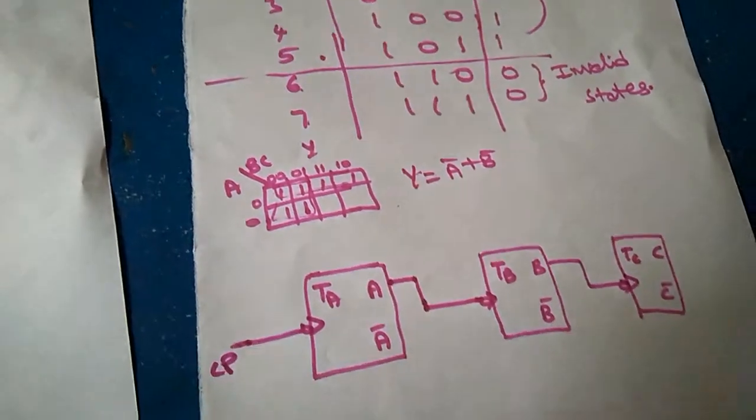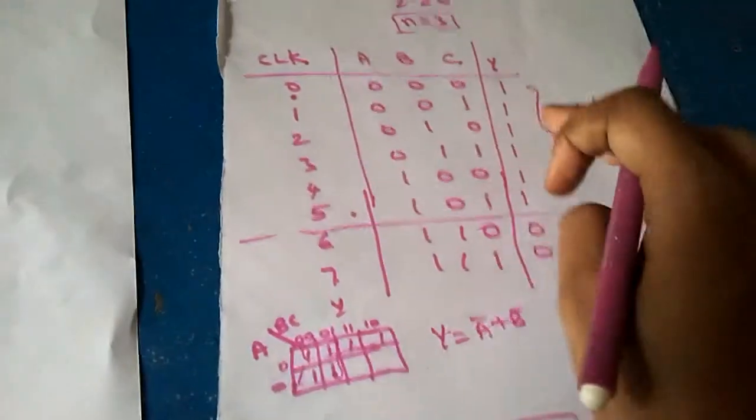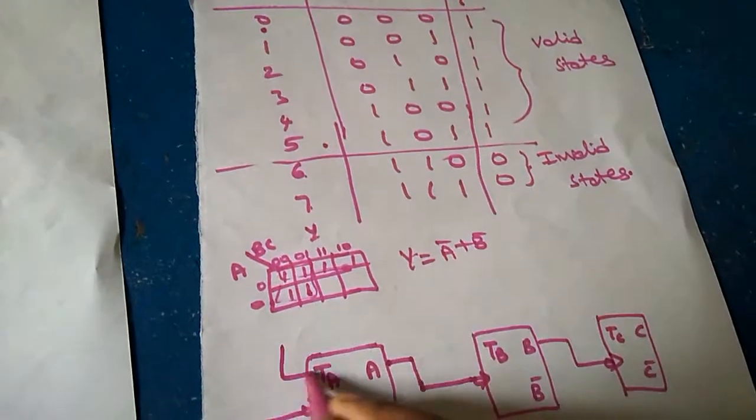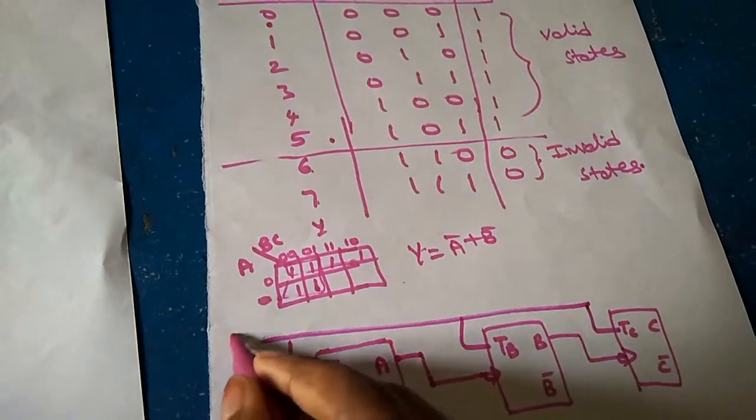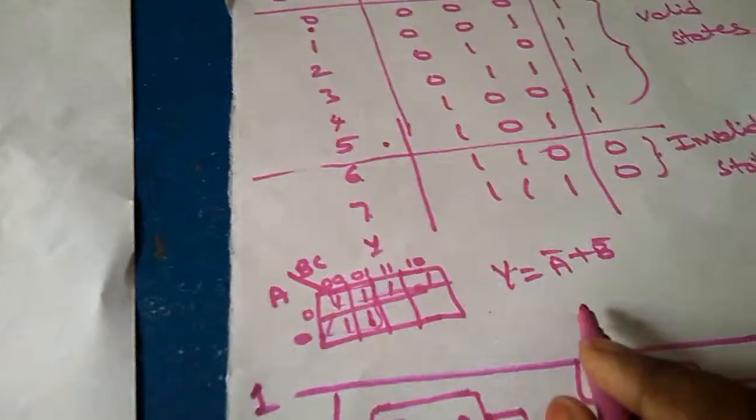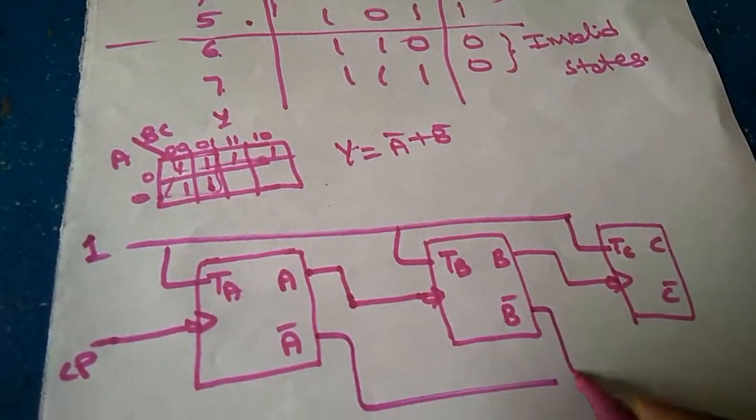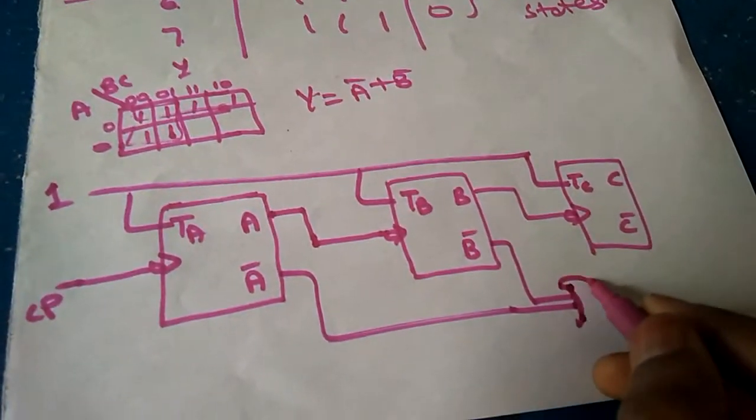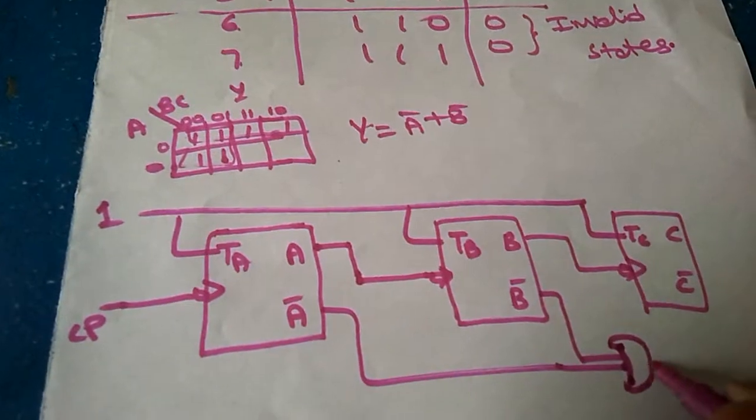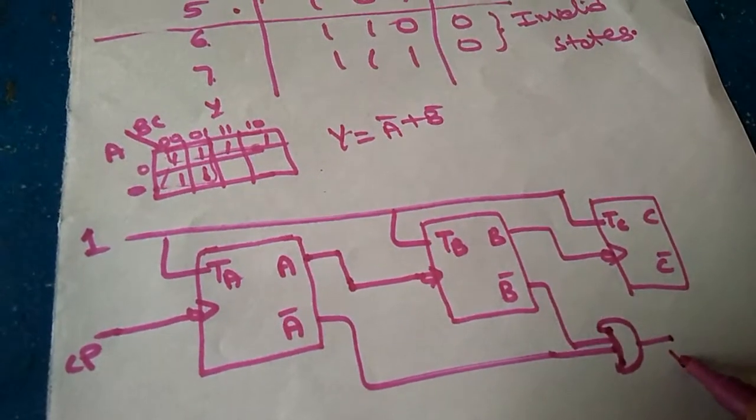Here is the clock pulse. So all we are getting one as output. So for TA, for TB and for TC, all outputs are one. And the output Y we are getting as A bar plus B bar. This is the output Y.